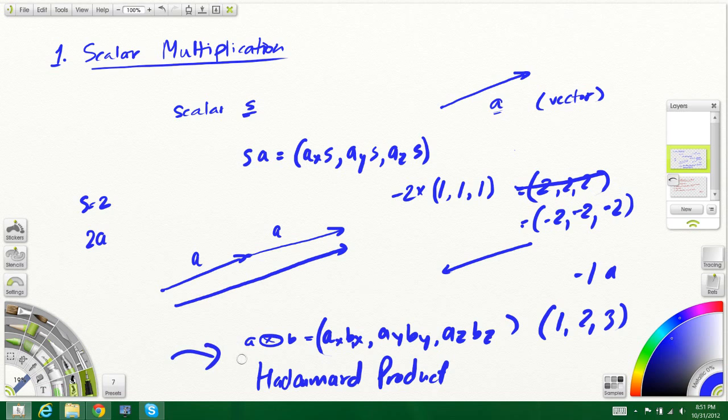This guy right here is not really used in game programming much, just because there's no need. There's other vector multiplication methods that are used, and I will be covering them in the next tutorial, and they are the cross product and dot product. I wrote this symbol right here to represent this kind of multiplication, which is the Hadamard product. The dot product is something like this, and I'll explain the cross product later on.